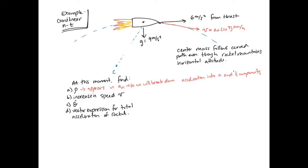I'm going to draw a new picture. This time, instead of drawing the whole rocket, I'll just draw its center of gravity and the accelerations: thrust of value 6, and gravity of value 9. We want to project these onto n-t coordinates, so we need to define where those are. The center of gravity is going along the curved path, so I'll add the n direction here, and the tangential direction, which is tangent to the path and 90 degrees from the normal, I'll draw here.